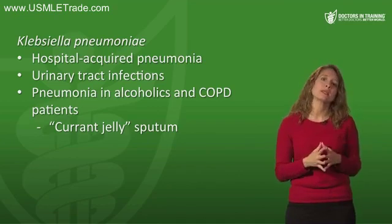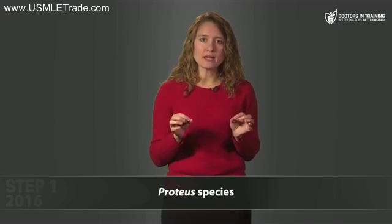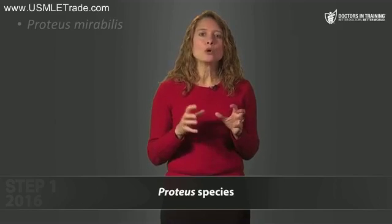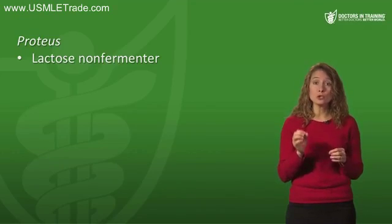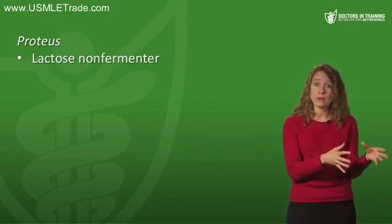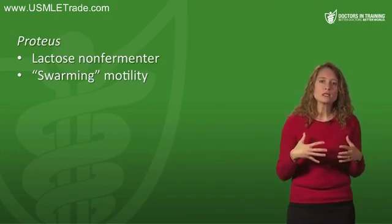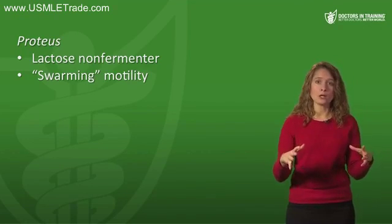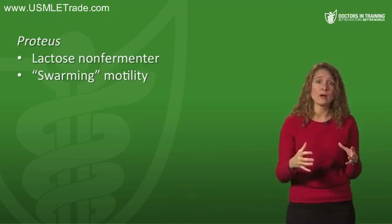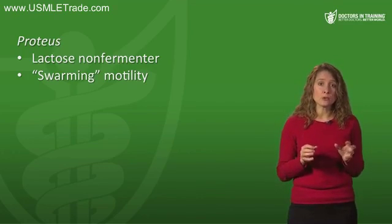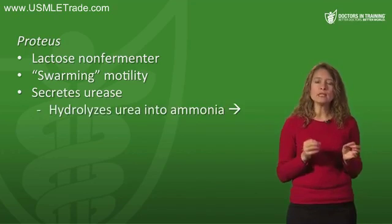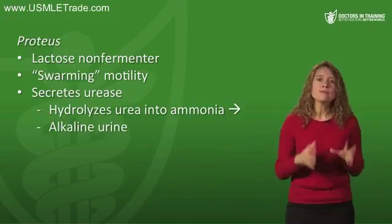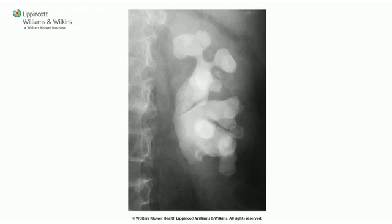For the last gram-negative organisms: Proteus mirabilis and Proteus vulgaris. Proteus does not ferment lactose. One microbiological clue is its motility — Proteus colonies can swarm an agar plate and obscure other bacteria trying to grow there. Another important clue is its secretion of urease, which can hydrolyze urea into ammonia, making urine alkaline in the urinary tract.